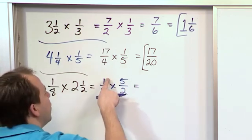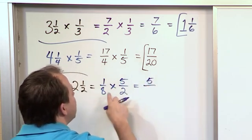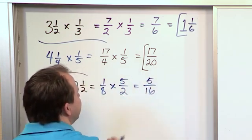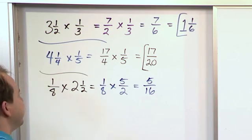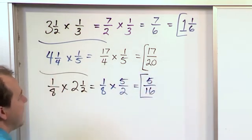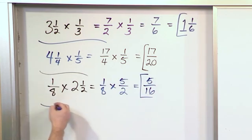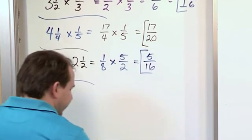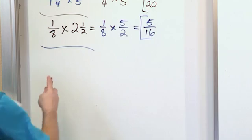Now when I have it in this form, 1 × 5 gives me 5, 8 × 2 gives me 16. I look at that and I see can I divide top and bottom by anything to simplify it, and I cannot. So that's the final answer. So no matter if your fraction is a mixed number or not, now you know how to multiply them.